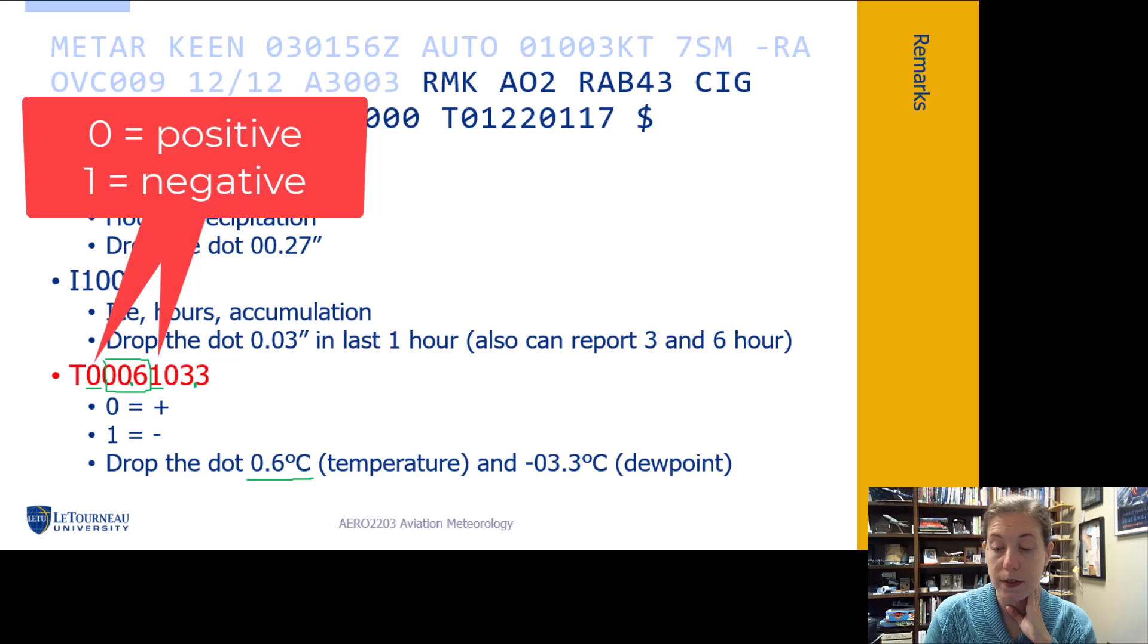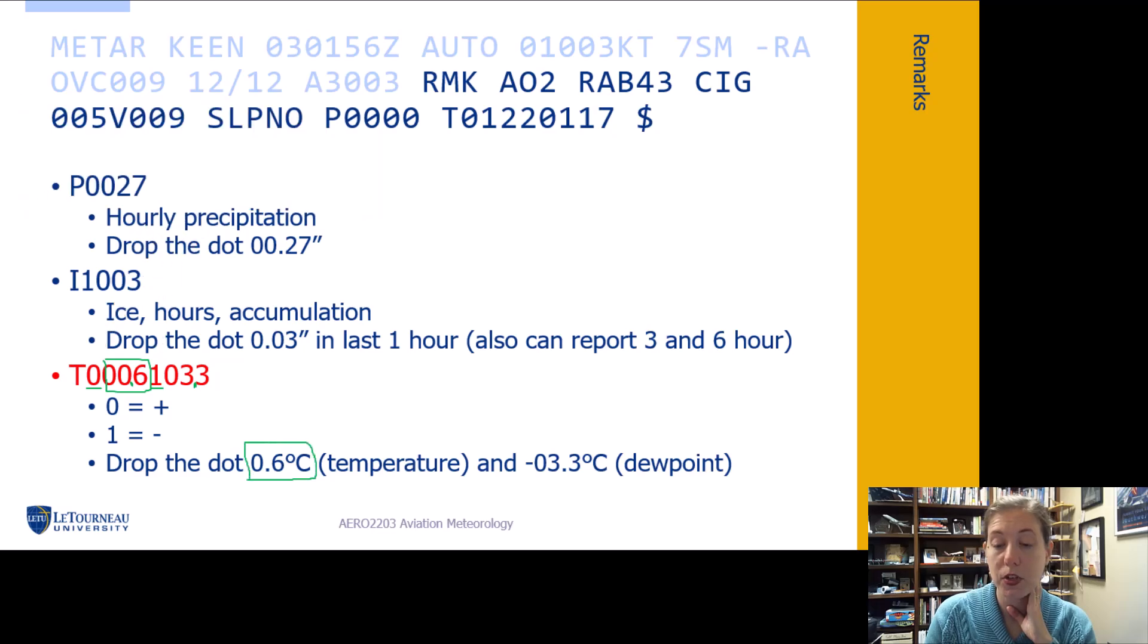So in this example, my temperature is 0.6 degrees Celsius. So I get my temperature from this T group in tenths of degree. And the dew point is negative 3.3 degrees Celsius. So the negative comes from the fact that we have a one here at the beginning of my dew point group. I will often look at the main body because in the main body here, if we have 0.6, that's going to be reported as 01 because the main body just rounds, and the dew point is minus 3.3. So I would have probably, it was going to say 01 and M03.